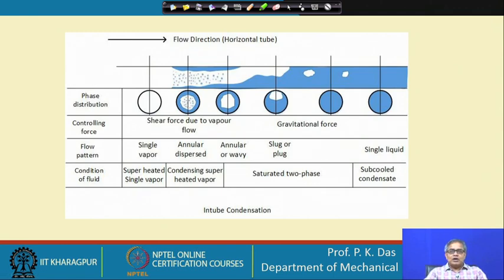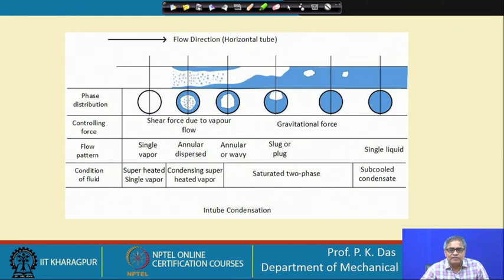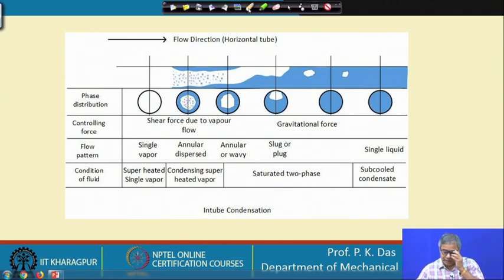In a horizontal tube — such as in the condenser of a refrigeration or air conditioning plant — the fluid can enter in the superheated condition and come out either in the two-phase condition or in the sub-cooled condition. There is a great variation of phases and flow regimes present. To recap the outside-tube condensation configuration: condensate film forms on the tube exterior and is drained by gravity.